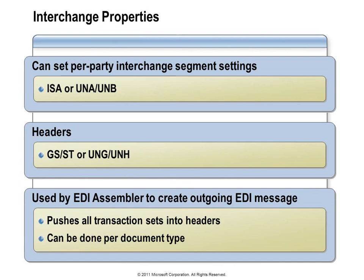When we configure parties, agreements, and profiles, we can also set up interchange properties — properties around the ISA or the UNA and UNB segments, and properties around how to handle headers for the GS, ST, UNG, or UNH, depending on whether we're using X12 or EDIFACT. The EDI assembler uses that configuration to set up the transaction sets in outbound documents. When setting those in the user interface, you can go in and for specific document types have different settings around how to handle those interchanges, with different X12 document specifications and different values for each one.